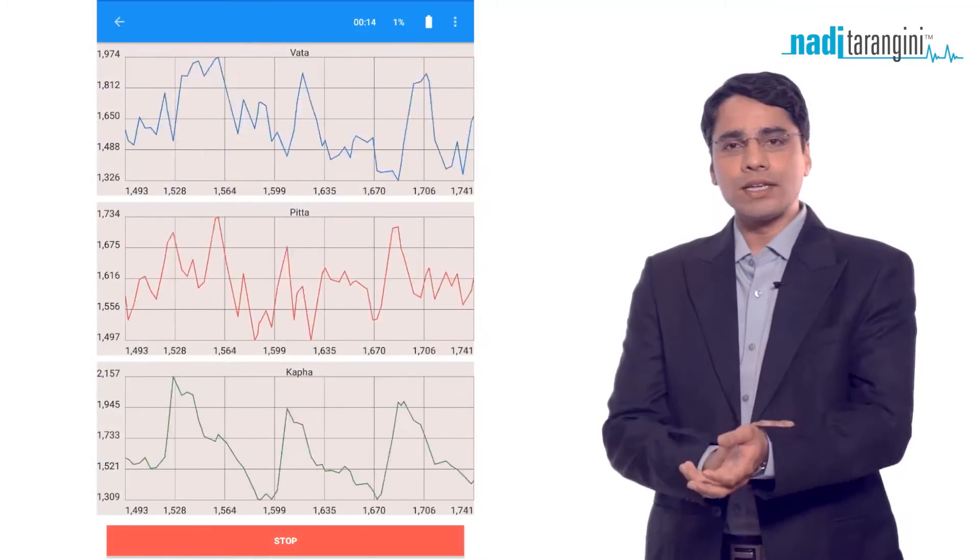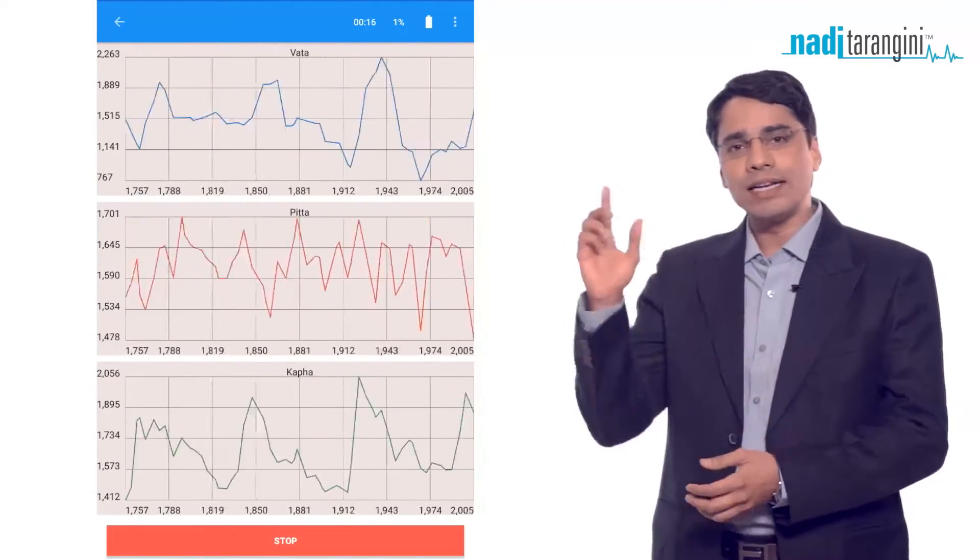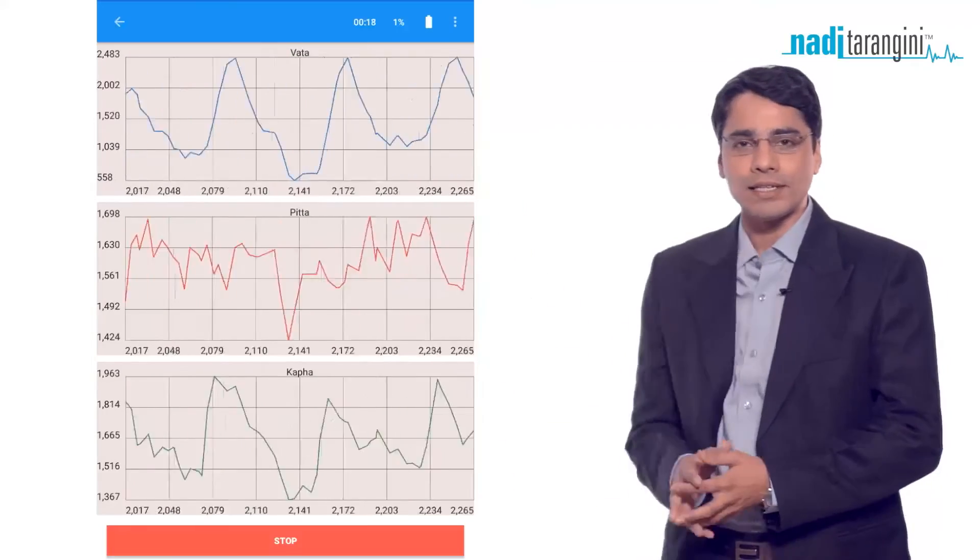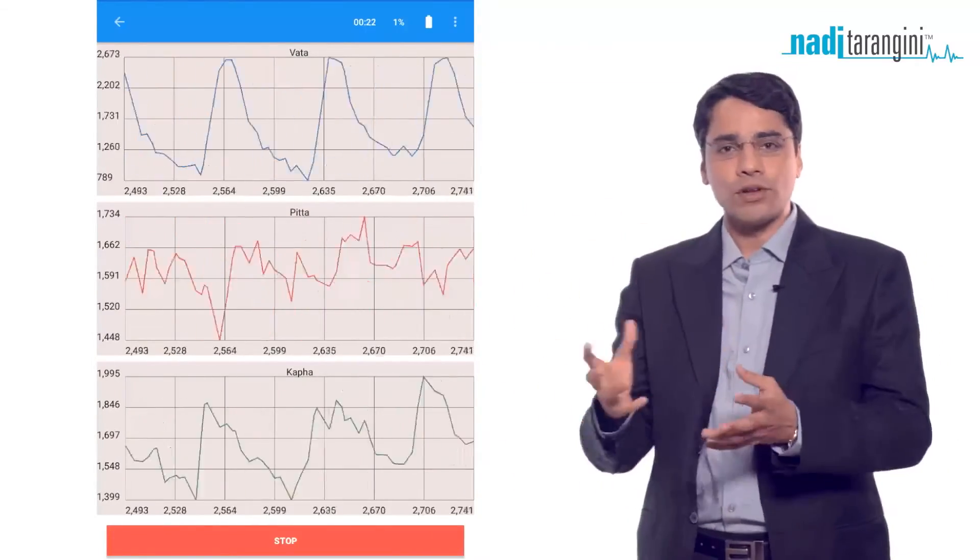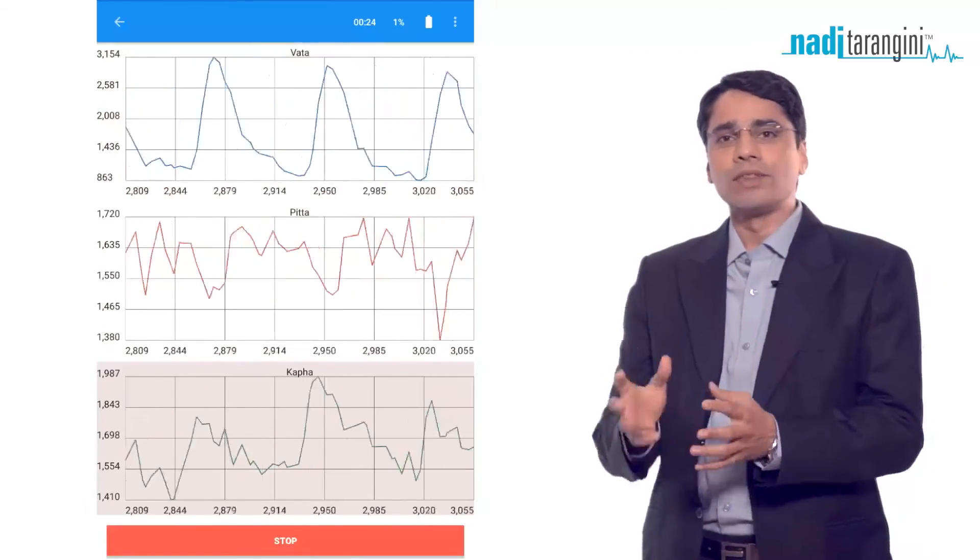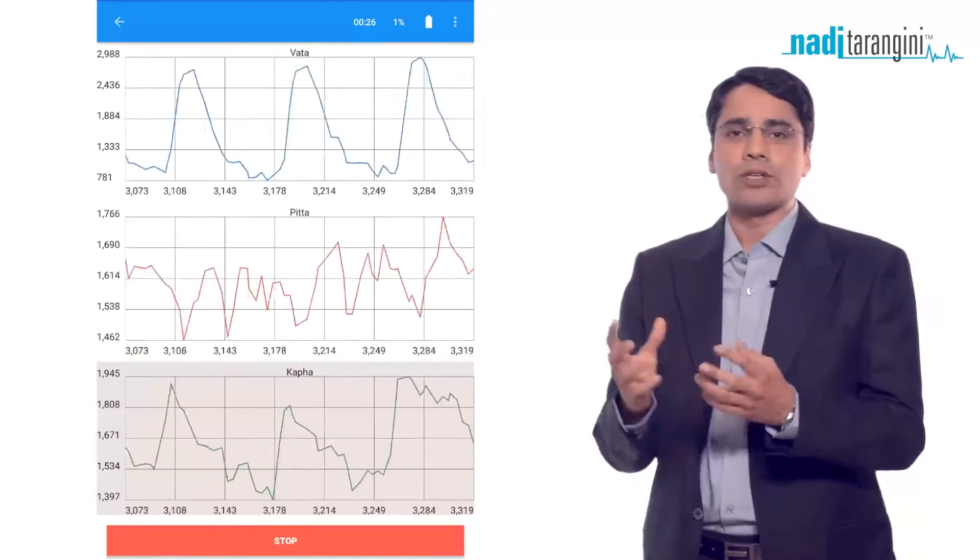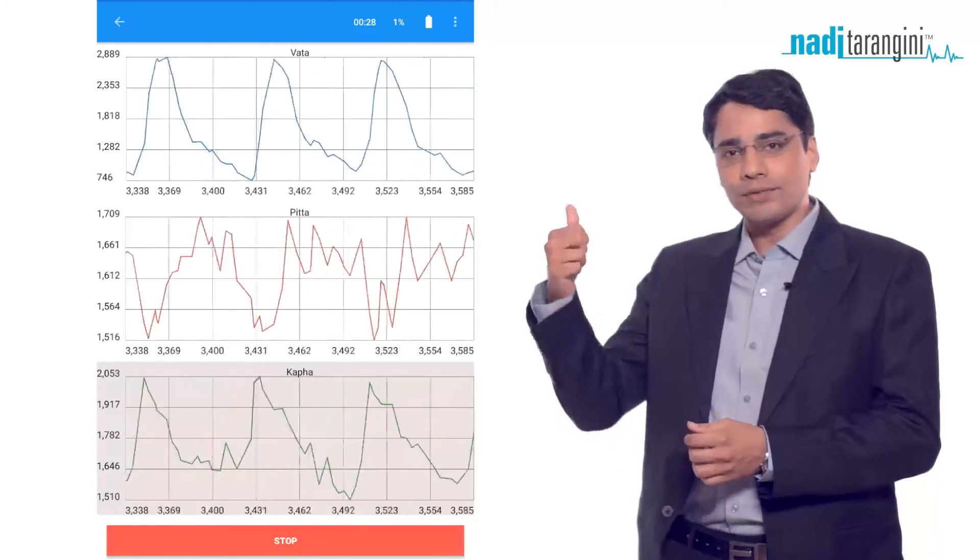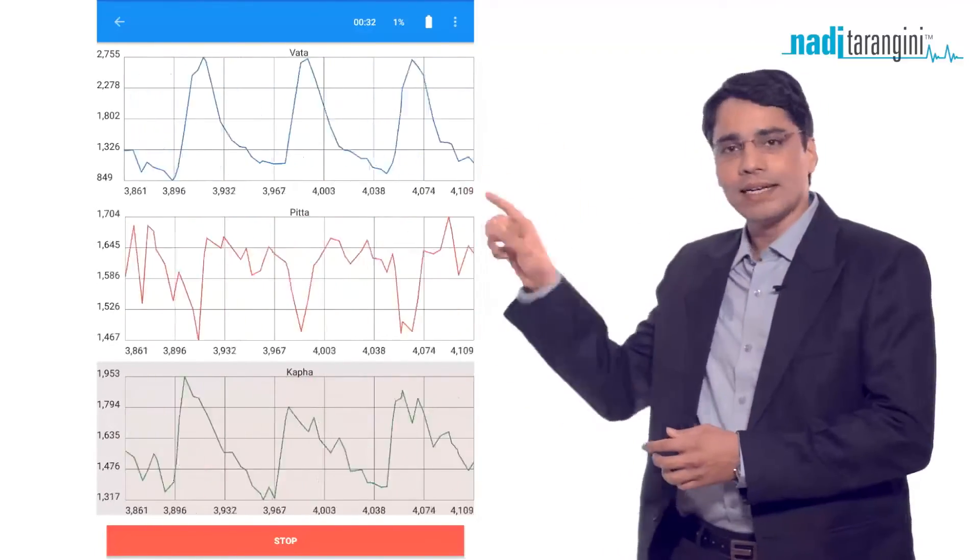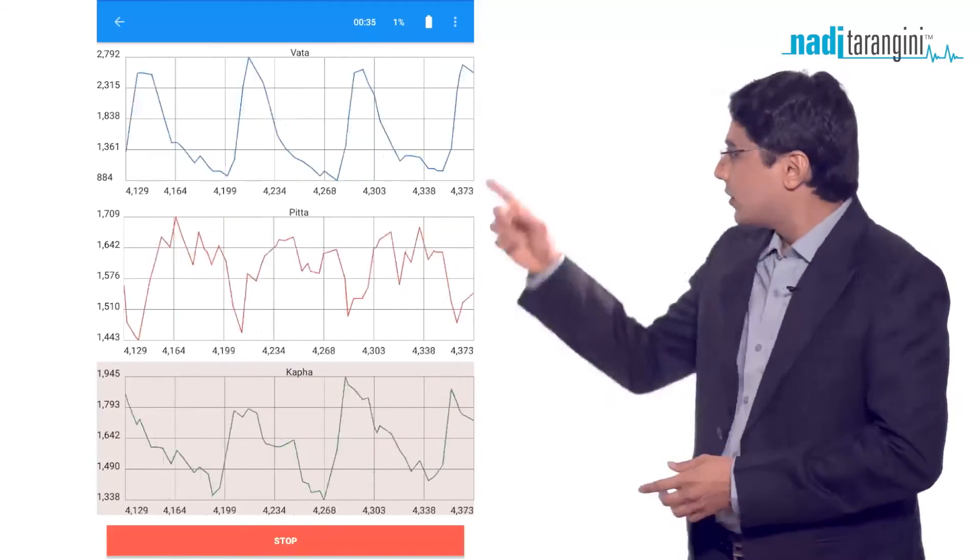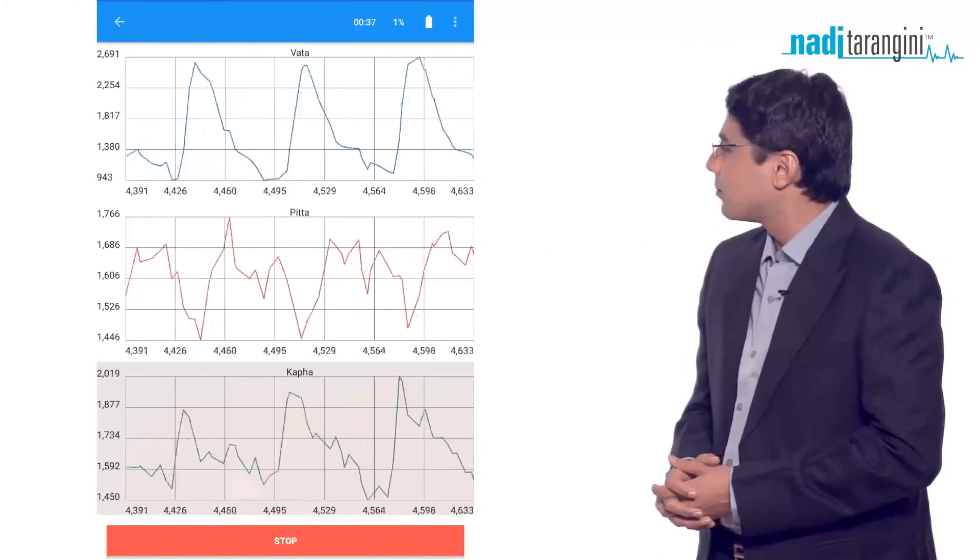Since we use three pressure sensors, ideally we should get all three pulse signals. But depending on the Prahar or physiological condition, one or two of the Doshas may not be strong. So you will get one, two, or three signals in the P-T-V-D rhythm format. I will explain this with various examples.